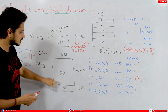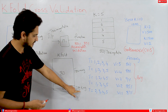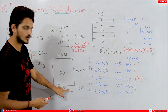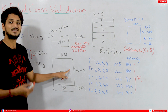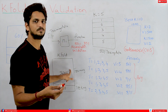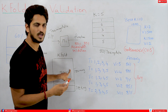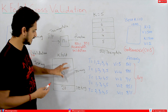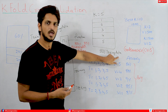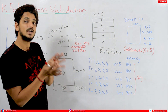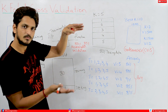In K-fold cross validation, we divide our data into two parts: testing (20%) and training (80%). Let's say k is equal to 5. We take this 80% of training data and divide it into 5 equal different parts.